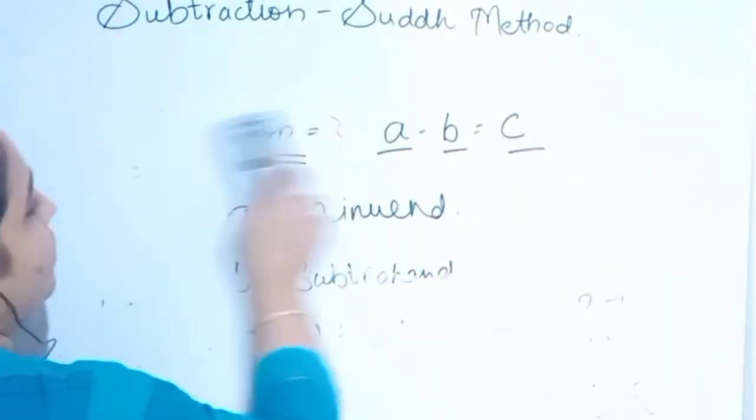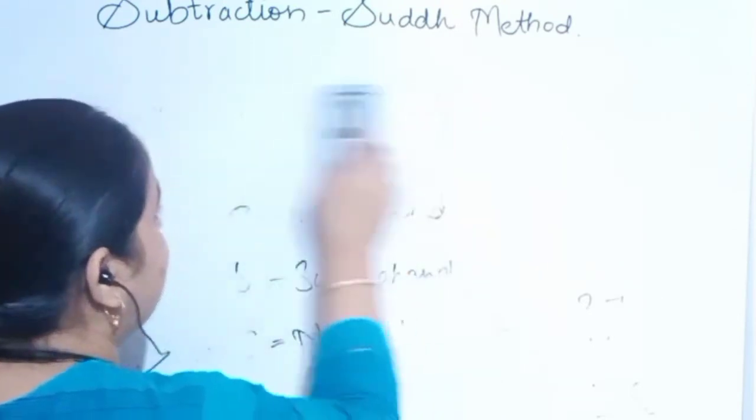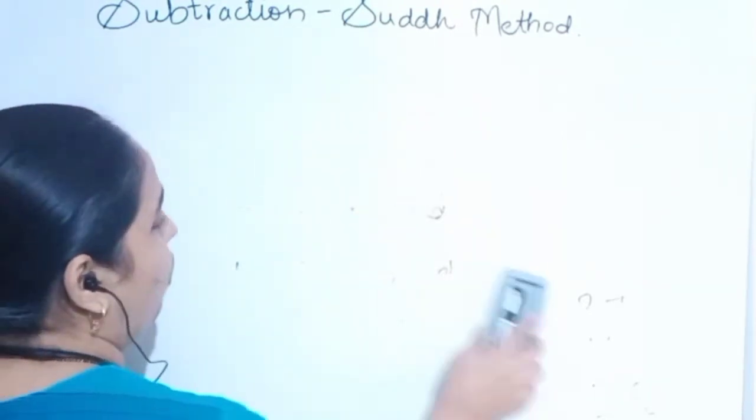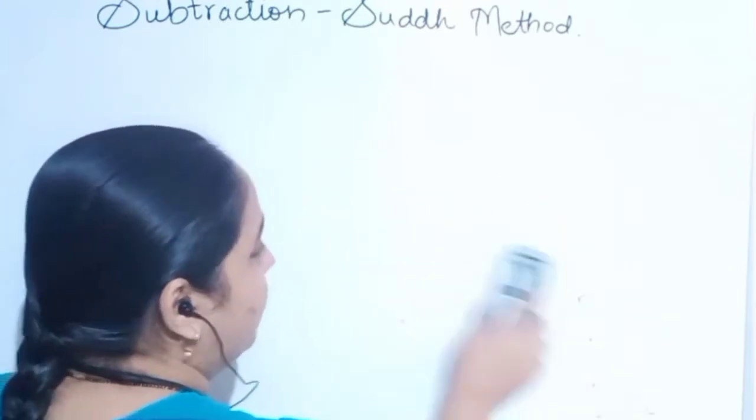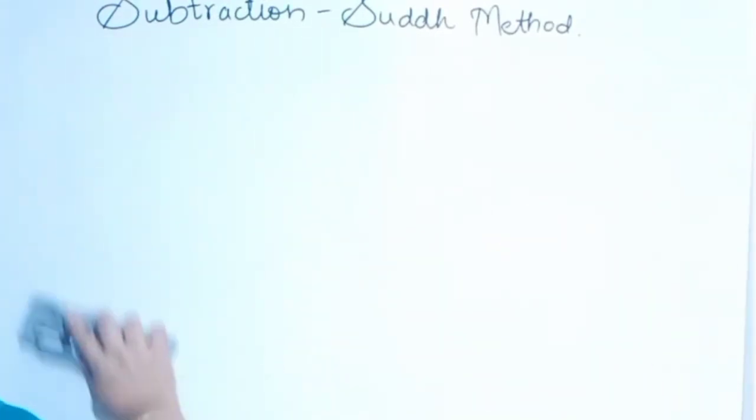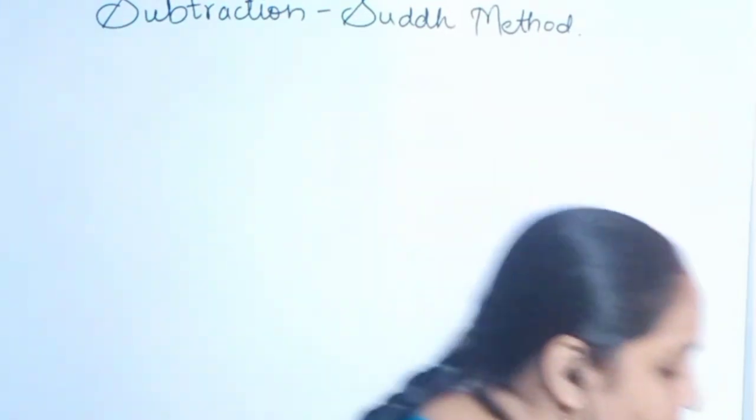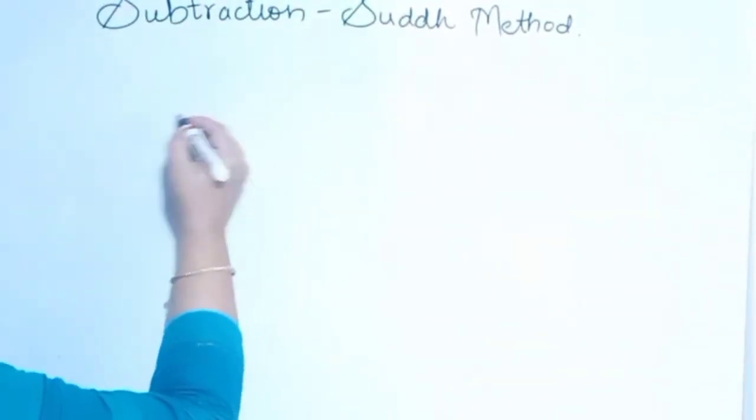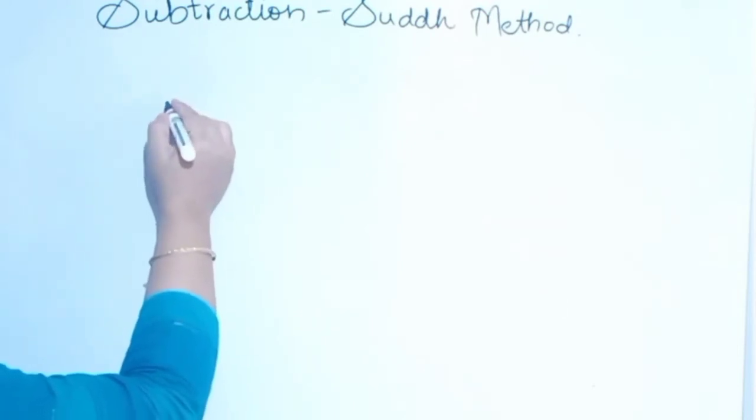Shuddha method is nothing but the easiest method to do calculations of any maths. It can be either addition, subtraction, multiplication, division, and so on. Addition we have already done, subtraction we are doing now. We will solve one more problem.